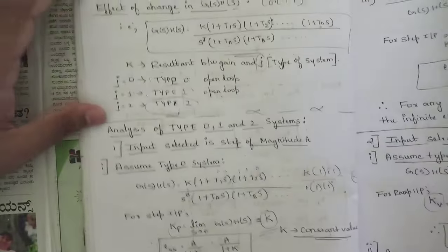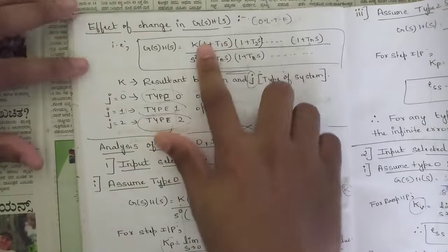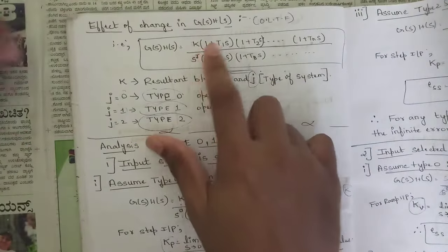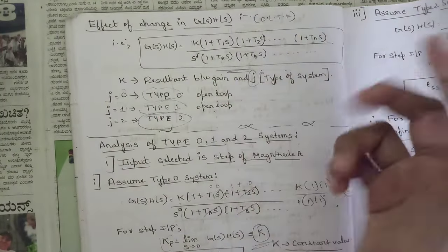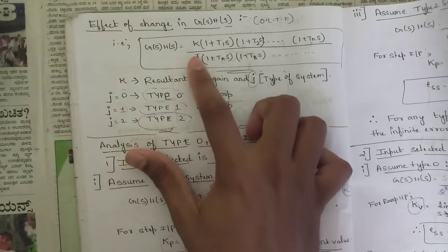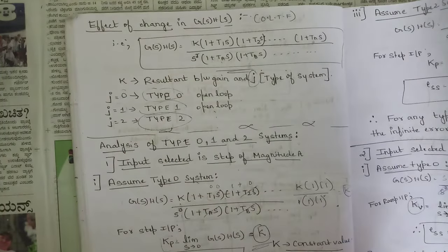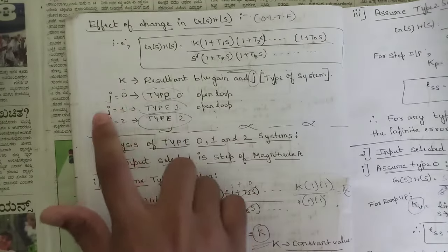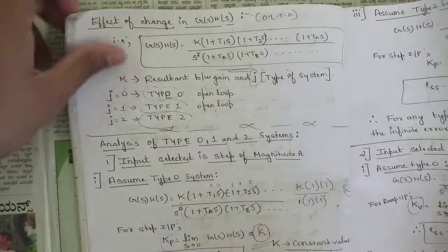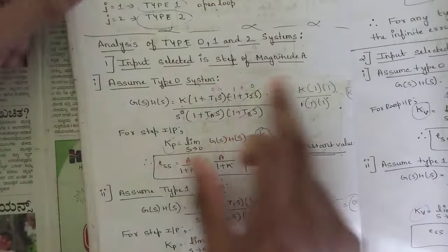We also discussed the effect of change in the transfer function. The general form of G(s)·H(s) has numerator K(1 + T₁s)(1 + T₂s)…(1 + Tₙs) divided by s^j, where j is the type of the system. When j = 0 it is type zero, j = 1 is type one, j = 2 is type two.